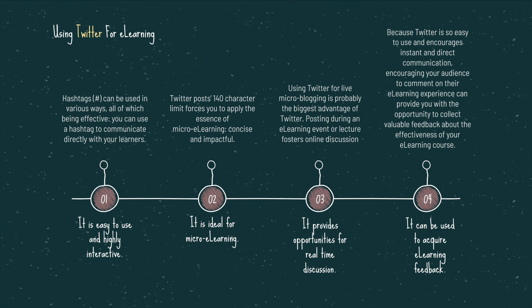Twitter is also ideal for micro-learning. Twitter posts allow only 140 characters, which forces you to apply the essence of micro-learning — concise and impactful communication. You have to find a way to deliver a powerful definition or learning concept in a very short 140-character narrative. With that constraint, there is more retention because you come up with a concise definition with a limited character count. Students tend to forget definitions written as longer paragraphs.